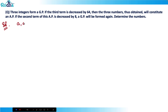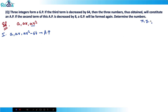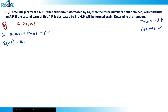In the first condition, the third term ar² is decreased by 64 to form an AP. If three numbers x, y, z are in AP, then 2y = x + z. So twice the middle term: 2ar = a + (ar² − 64). This gives us equation one: 2ar = a + ar² − 64.